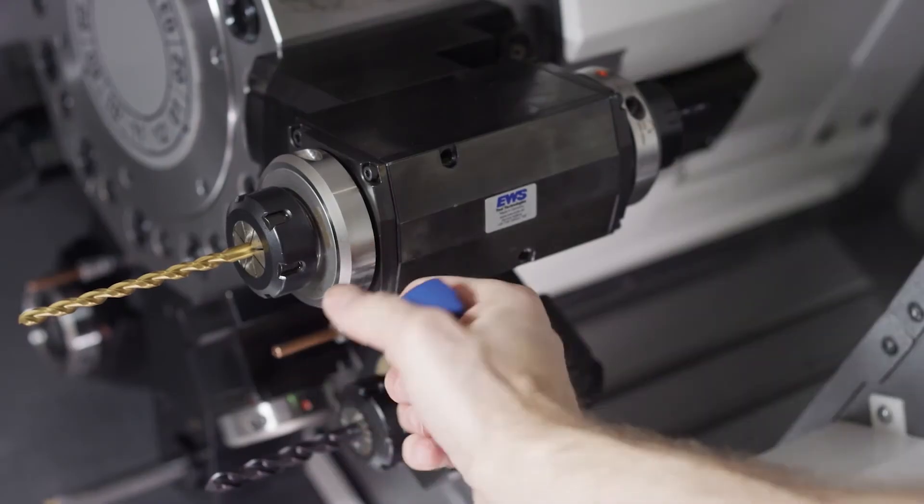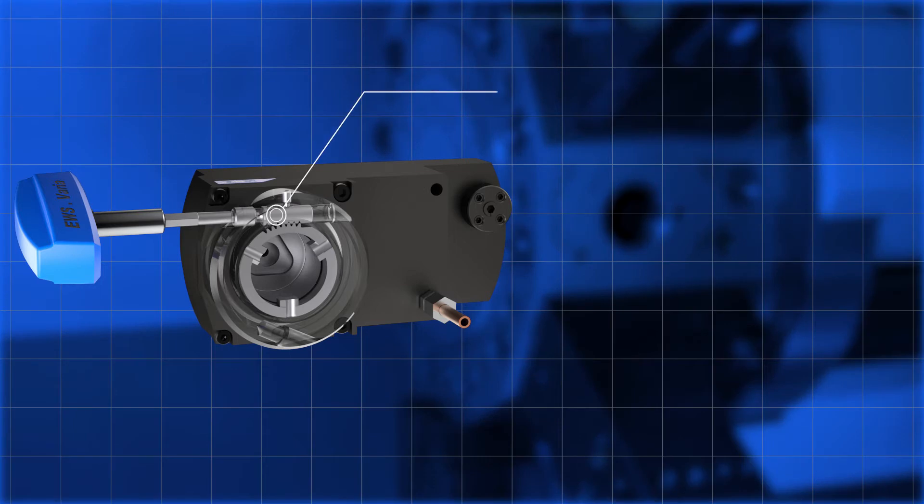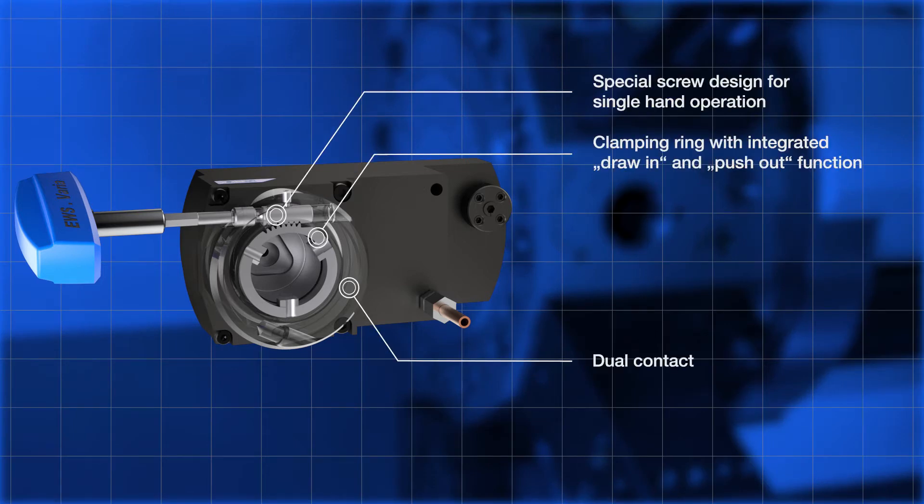A partially serrated guide ring pulls the adapter evenly at three points to the tool body. It is clamped simultaneously on the taper and plane surface to provide the best possible concentricity and rigidity.